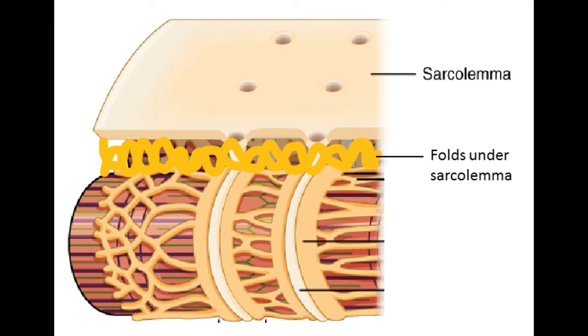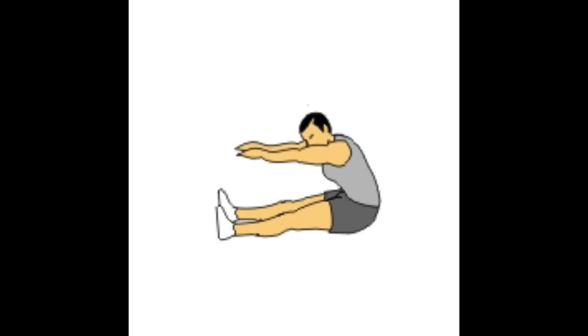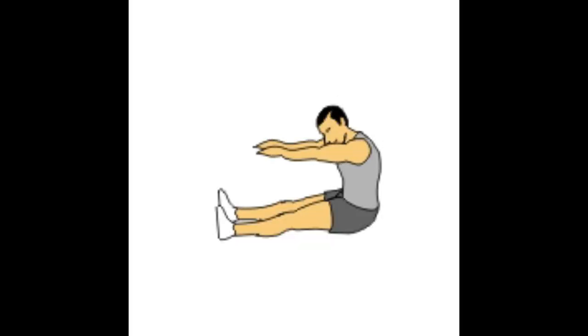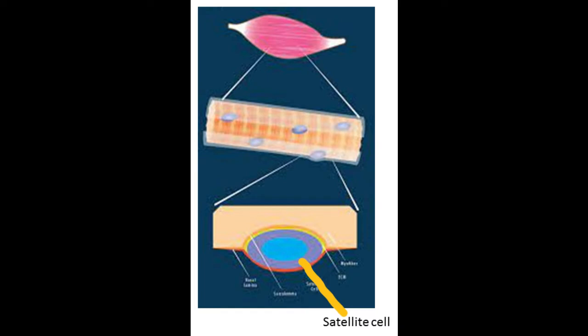These folds perform two primary functions: they keep plasmalemma intact when a muscle stretches, and they assist in transmission of action potential from neuron to muscle fiber. Satellite cells are present beneath plasmalemma. Their function is growth and development of a skeletal muscle. They also assist muscles' adaptation from injury, immobilization, and training.